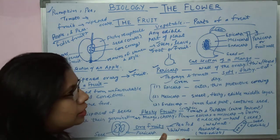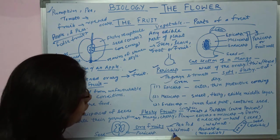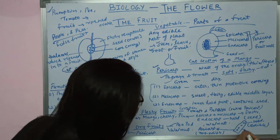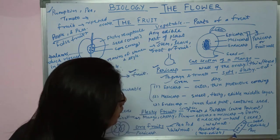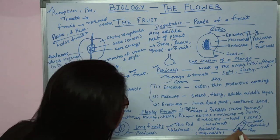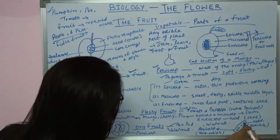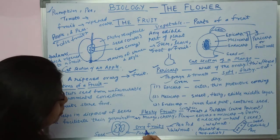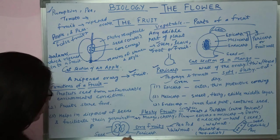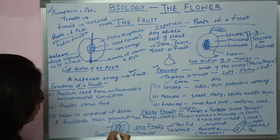In dry fruits, two examples are the pea pod and walnut. In the pea pod, the pericarp is the outer pod, which is the non-edible part; the pea inside is the seed, which is edible. Similarly in the walnut, the outer covering is the pericarp, which is hard and not edible, and inside it the seed is there, which is edible.